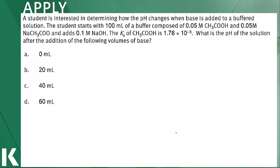For our apply question, we're going to look at what happens when we add base to a buffered solution. A student is interested in determining how the pH changes when base is added to a buffered solution. The student starts with 100 milliliters of a buffer composed of 0.05 molar acetic acid and 0.05 molar sodium acetate — sodium acetate being the conjugate base. To this buffered solution, we're going to add 0.1 molar sodium hydroxide. The Ka of acetic acid is 1.76 × 10⁻⁵. We want to know the pH after the addition of each of the following volumes of base.